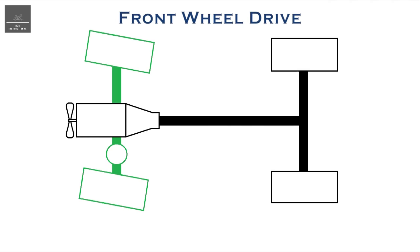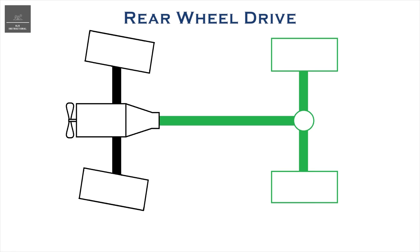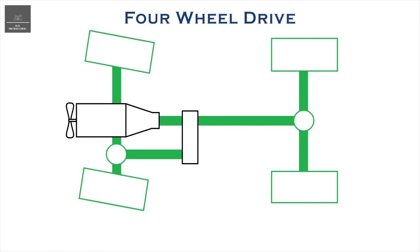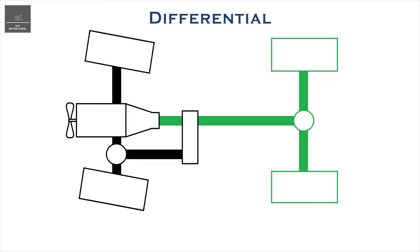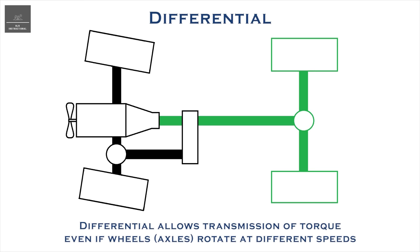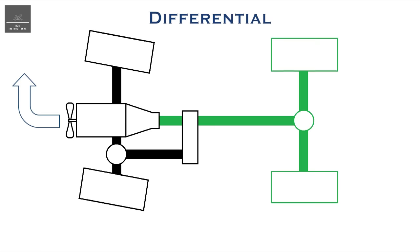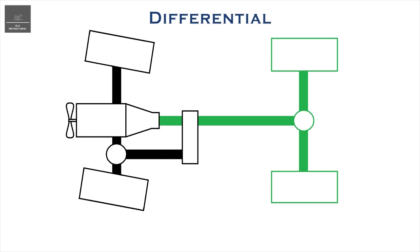In a front-wheel drive vehicle, the differential is at the front. In a rear-wheel drive vehicle, the differential is at the rear. A 4WD vehicle will have two differentials, one at the front and one at the rear. The differential gets its name as it allows torque to be transmitted to the wheels even if the wheels spin at different speeds. Say a vehicle is turning to the right — the outside left wheels cover more distance and spin faster than the inside right wheels, which cover less distance and spin slower. The beauty with the differential is it does this automatically, with no driver input.